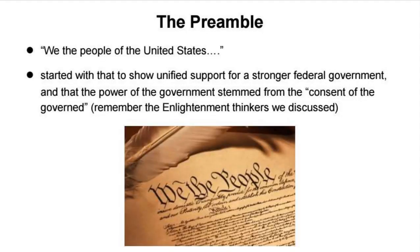Once they started debating the issues, they realized they needed to convince the people that the Constitution was of the people and not of the elites. They knew that being elite themselves, people might be suspicious of them. So the preamble — the introduction to the Constitution — starts with 'We the people of the United States,' to show unified support for this stronger federal government and that the power of the government stemmed from the consent of the governed, echoing the Enlightenment thinkers used in the Declaration of Independence.